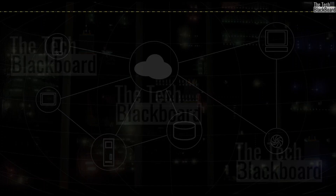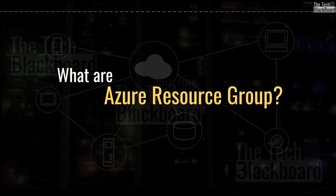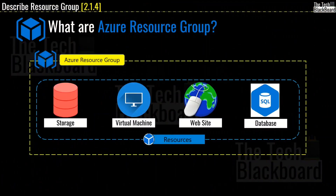Now that you understand Azure resources, let's talk about Azure resource groups. Simply put, Azure resource groups are nothing but a container in which all your resources reside. Think of a resource group as a folder in Windows inside which you store all your files. As shown in the demo, each resource in Azure must belong to a resource group — it is a logical container that associates multiple resources so you can manage them as a single entity based on lifecycle and security.